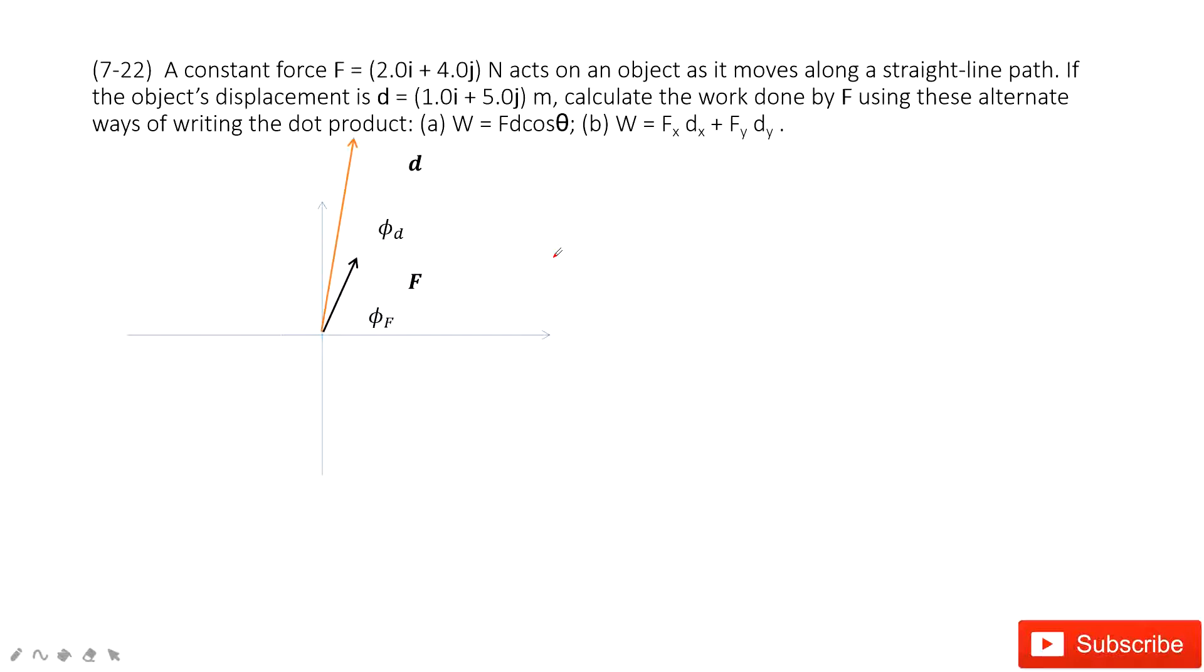In this one you can see we know the force as a vector has two components, x-component and y-component. And we also know displacement in vector format has x-component and y-component. Then we need to find its work. And we know the work is fd cosine theta. And also we can say the work is a dot product for f and d. So we have two ways to find the work.